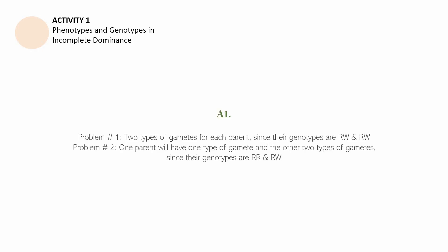The answer for question number 1, problem number 1: two types of gametes for each parent since their genotypes are RW and RW. Problem number 2: one parent will have one type of gamete and the other two types of gametes since their genotypes are RR and RW.